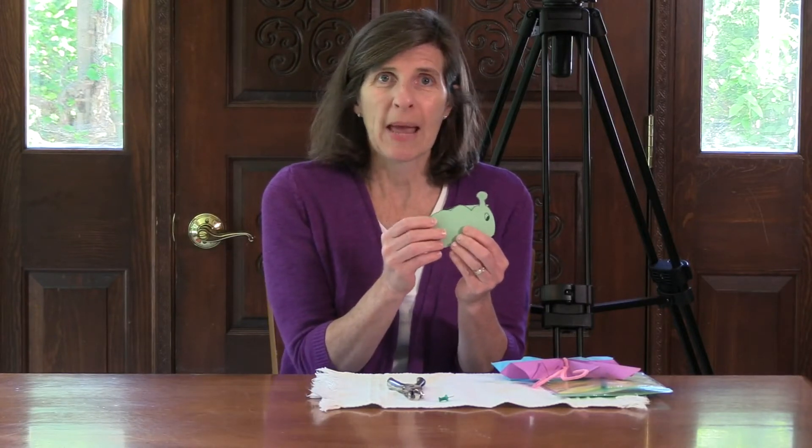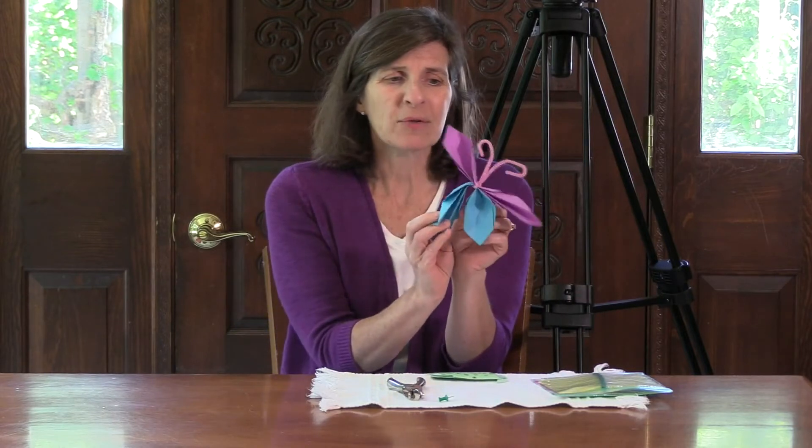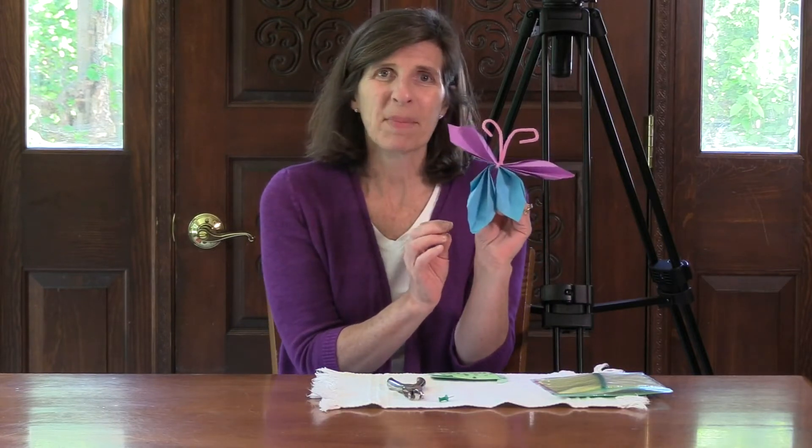And as the caterpillar eats the leaf, it's going to get bigger and bigger and then it's going to wrap itself in a chrysalis and magically come out as a butterfly. We're going to do some Japanese art of paper folding called origami to make our butterflies.